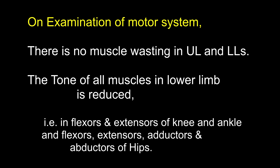On examination of the motor system, there is no muscle wasting in the upper and lower limbs. The tone of all muscles in the lower limb is reduced — in the flexors and extensors of the knee and ankle, and flexors, extensors, adductors, and abductors of the hip. What does the hypotonia suggest? That it is either a lower motor neuron type of paralysis, or since the history is very short — just 4 days — it may be an upper motor neuron type of paralysis in the state of neuronal shock. How do you test the tone of muscles? By moving the joints passively and noting the resistance offered by the muscles to passive movements, and by palpating the muscle mass. If the tone is reduced the muscles will feel flabby; if increased, the muscles will feel firm.